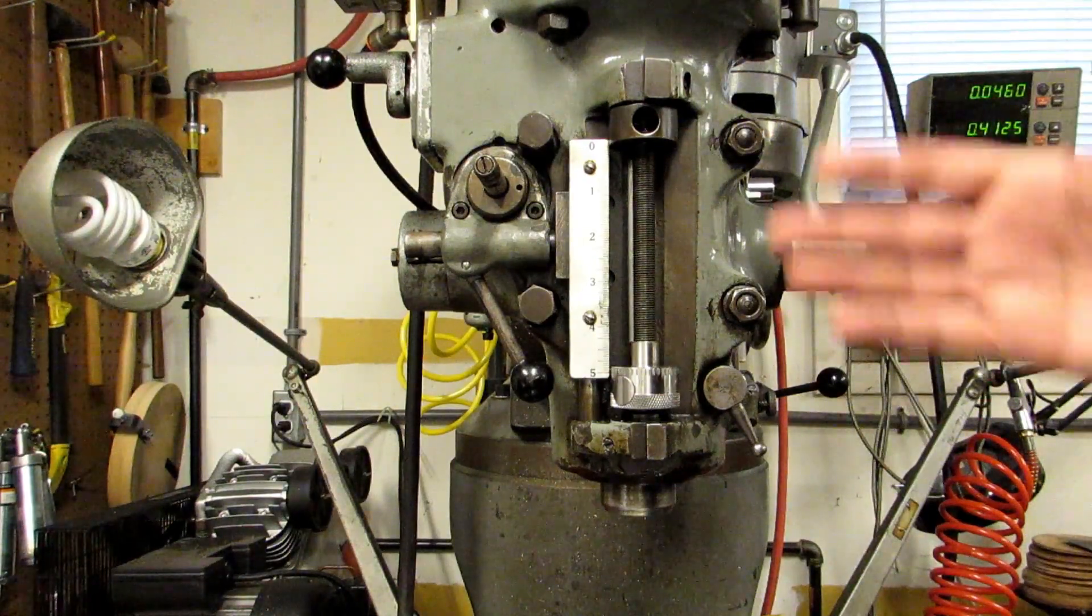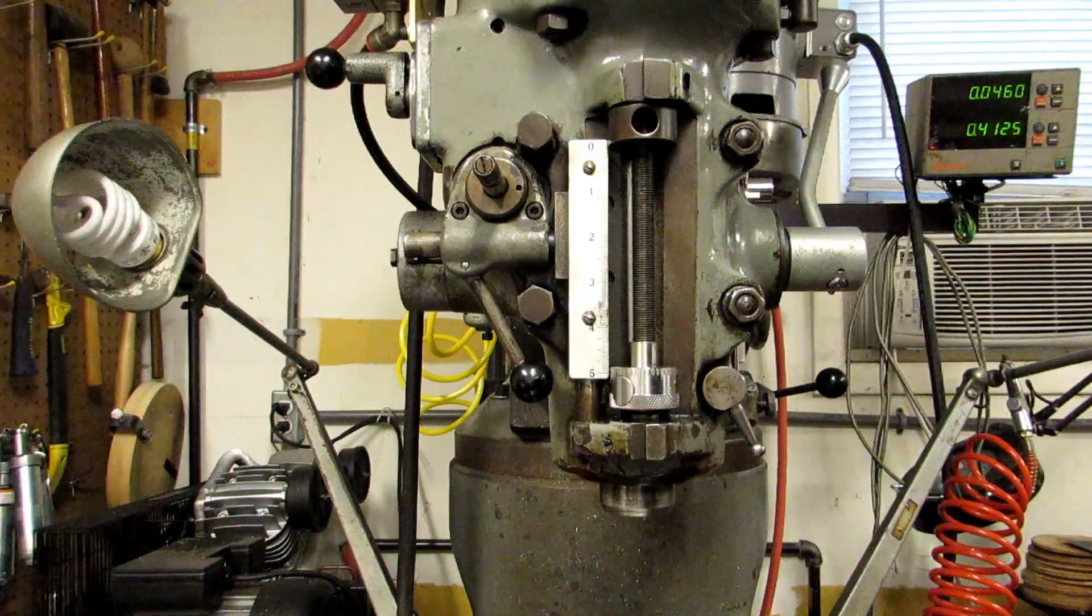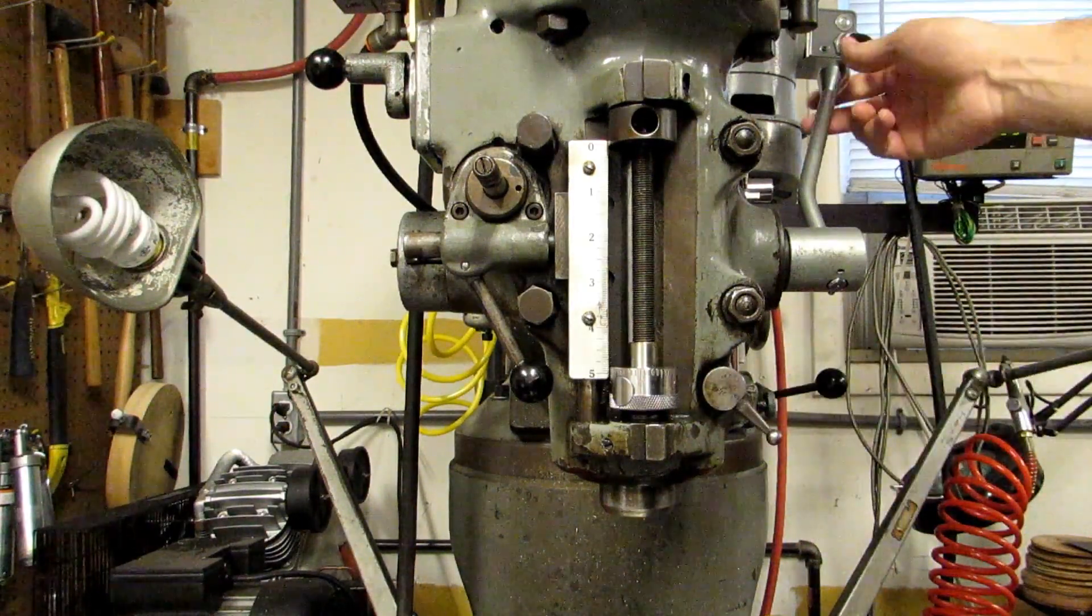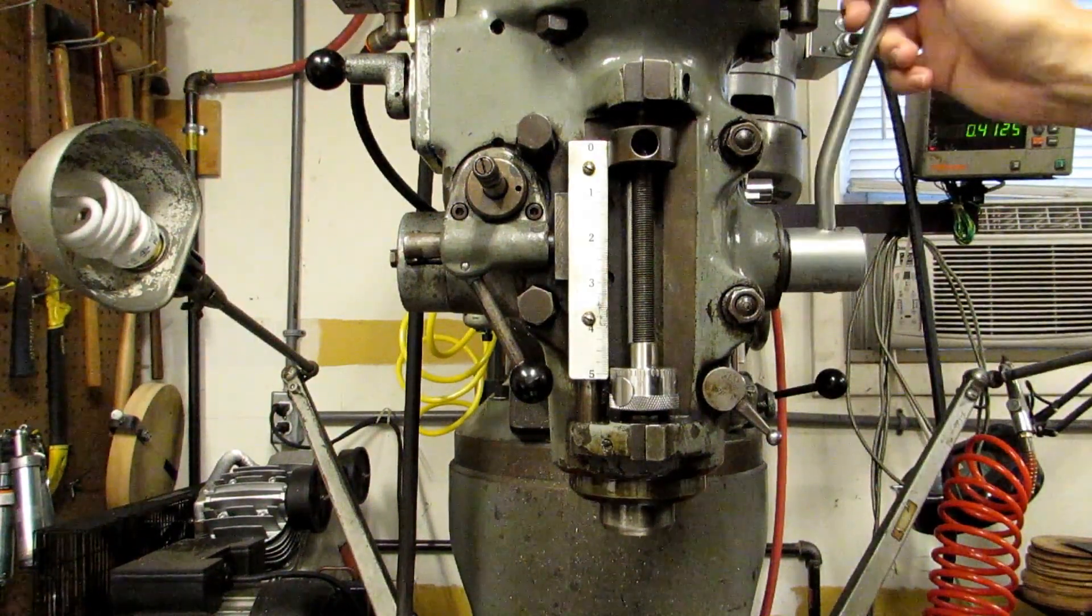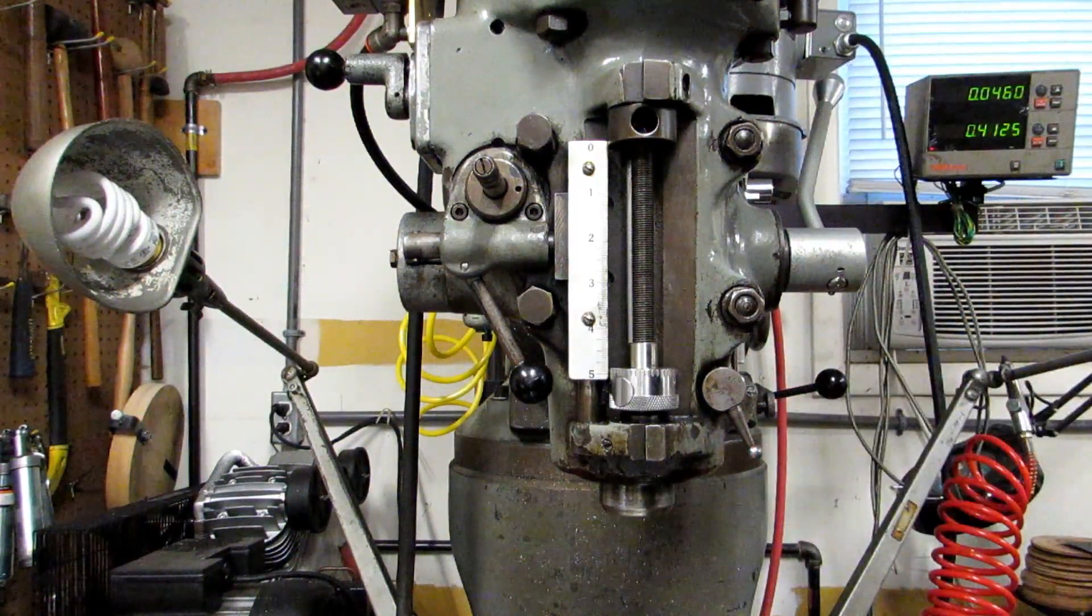Now they also sell quill mounted digital readout systems and those are pretty simple because on a Bridgeport and a Bridgeport clone you've only got five inches of travel and those all have six inches of travel on the scale.